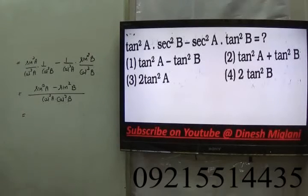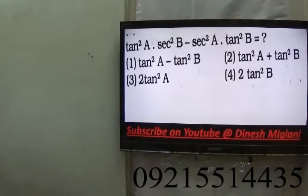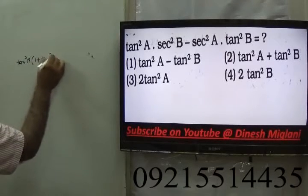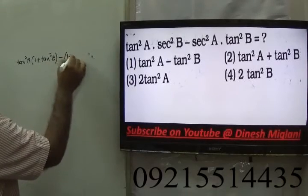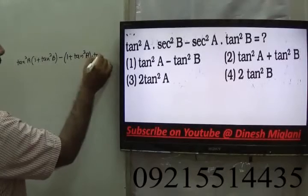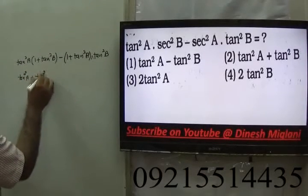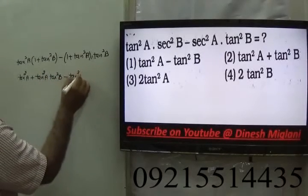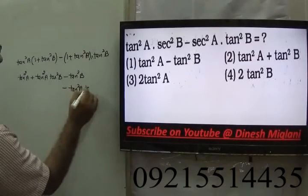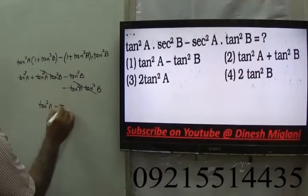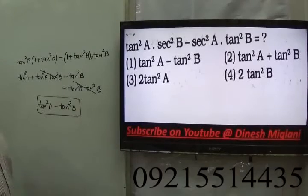So tan²A·sec²B = tan²A·(1 + tan²B) = tan²A + tan²A·tan²B. And sec²A·tan²B = (1 + tan²A)·tan²B = tan²B + tan²A·tan²B. Subtracting: tan²A + tan²A·tan²B - tan²B - tan²A·tan²B. The tan²A·tan²B terms cancel out, leaving tan²A - tan²B. Hence the answer is tan²A - tan²B.